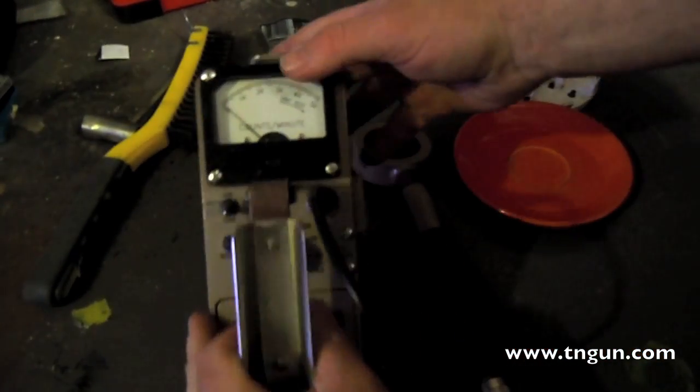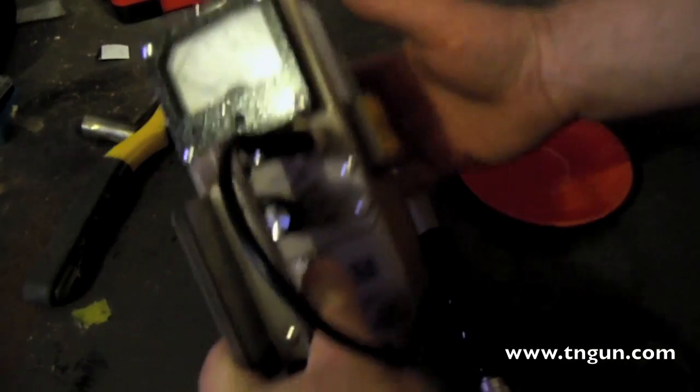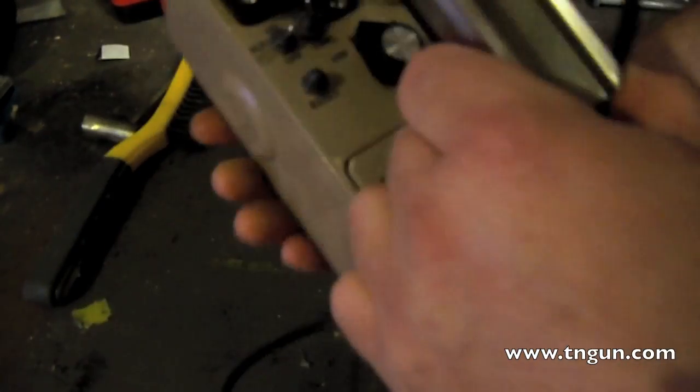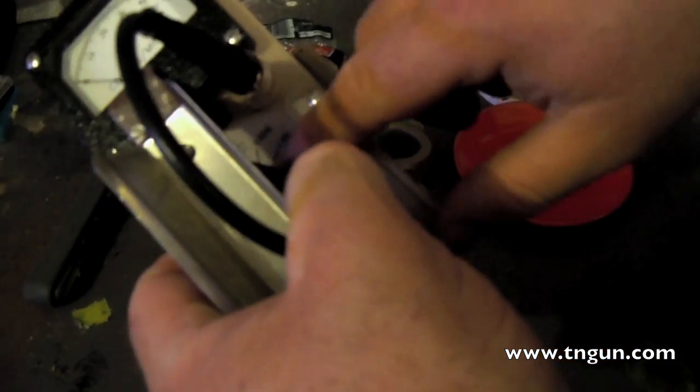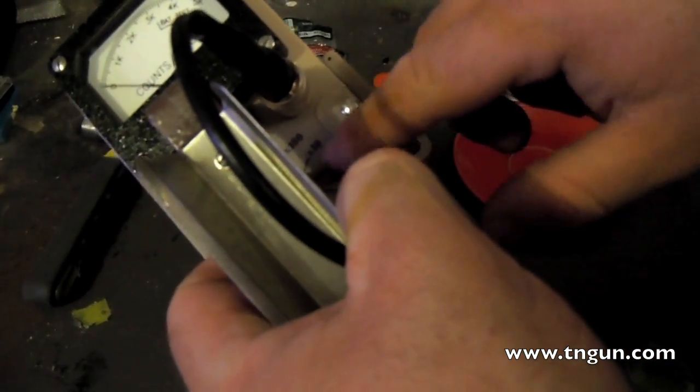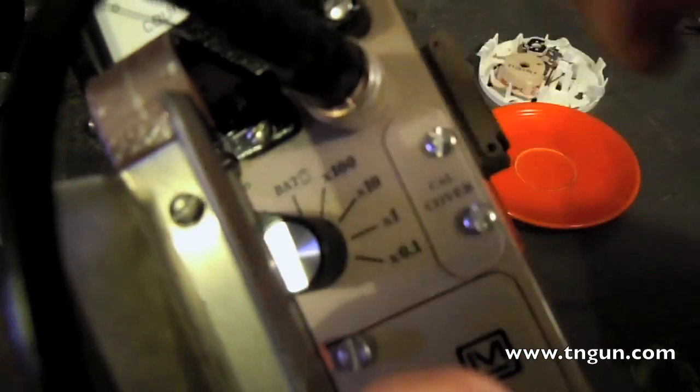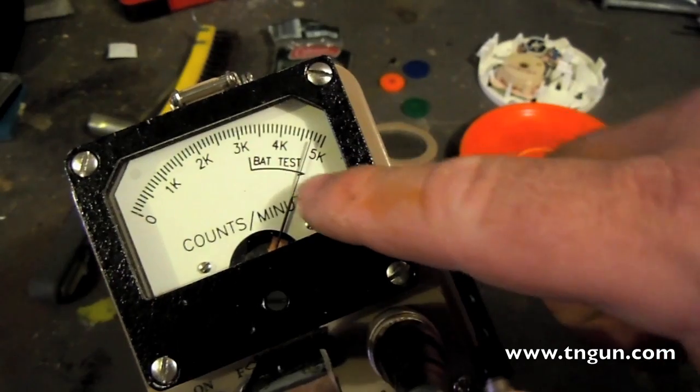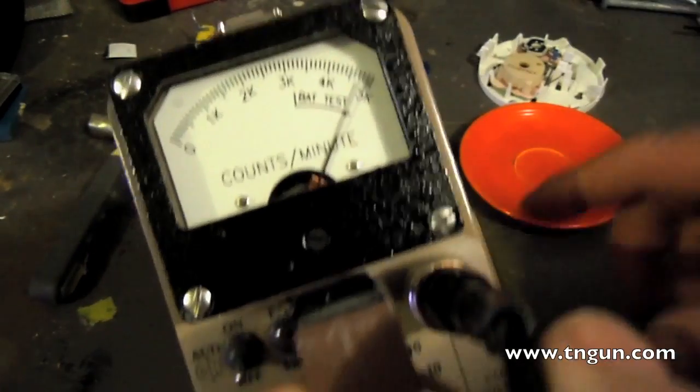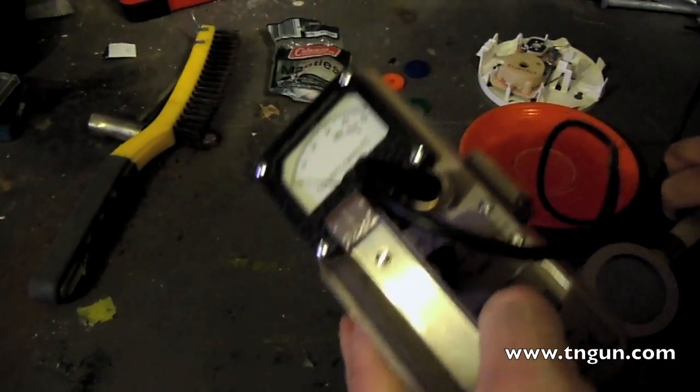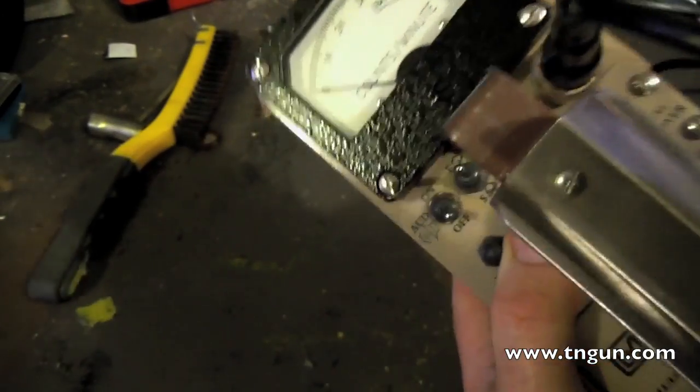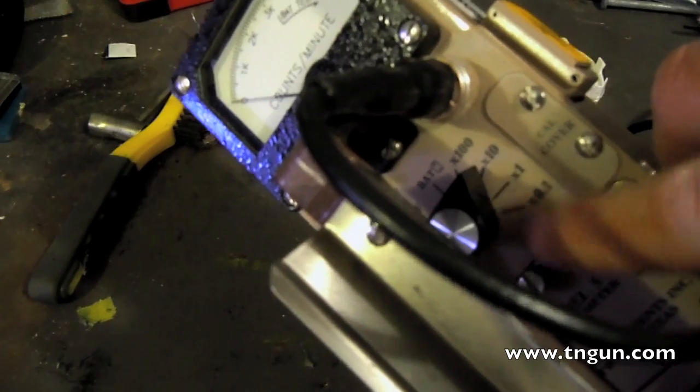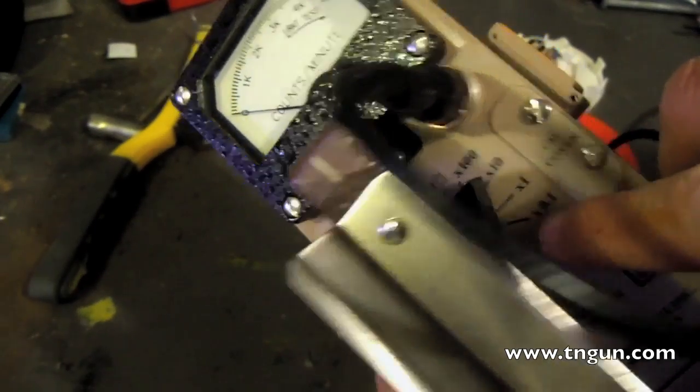After you put the batteries in, you want to check the battery. It's got this knob off and then it's got different time levels to it. Then it says battery. If you put it on battery, if the meter is anywhere within that good battery side, then it's okay to use.